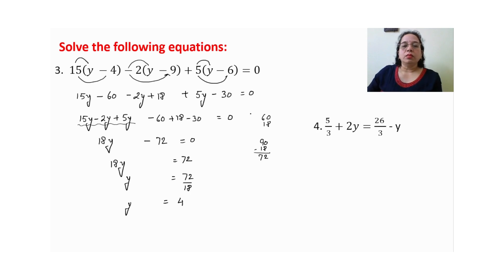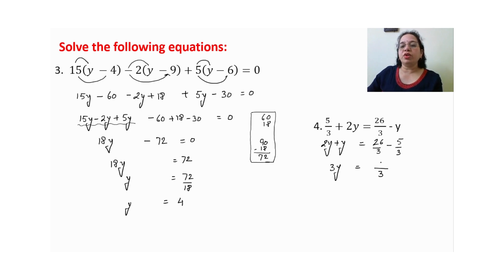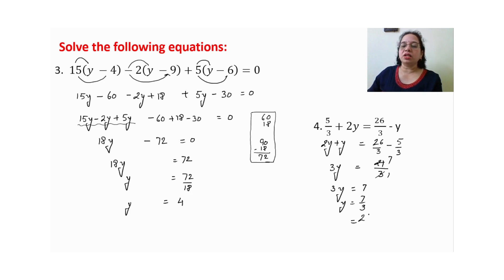Let us solve the fifth sum. 2y minus y becomes plus y on one side, and 26 upon 3 minus 5 upon 3 — both denominators same, so only numerators operate: 26 minus 5 = 21. So 3y upon 3 = 21 upon 3. Numbers cut: 3 and 3, 3 and 21 — so 3y = 7, therefore y is equal to 7 upon 3.